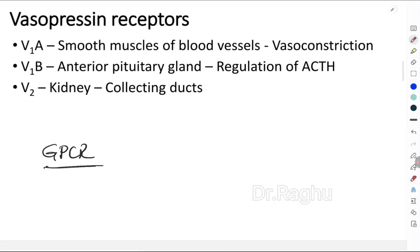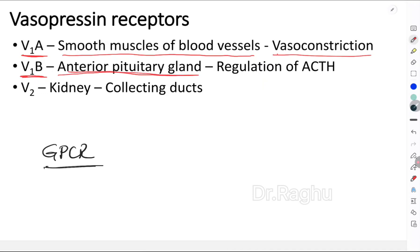There are three receptors on which vasopressin acts. The first is the V1A receptor, present in the smooth muscles of blood vessels; when vasopressin acts on it, it causes vasoconstriction. The second is the V1B receptor, present in the anterior pituitary gland; when vasopressin acts on it, it helps regulate ACTH — more specifically, it increases ACTH secretion.